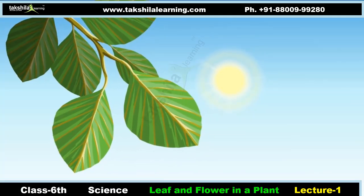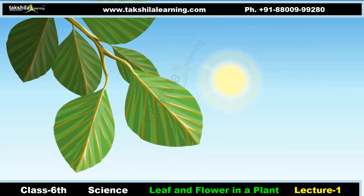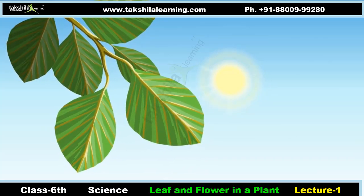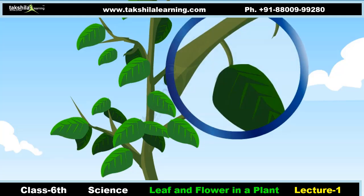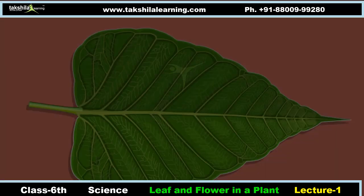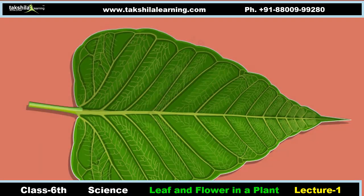A leaf is a flat green structure attached to a node on the stem. The stalk by which a leaf is attached to the stem is called the petiole. The thin, flat part of the leaf is called the lamina. The lamina is green in color.